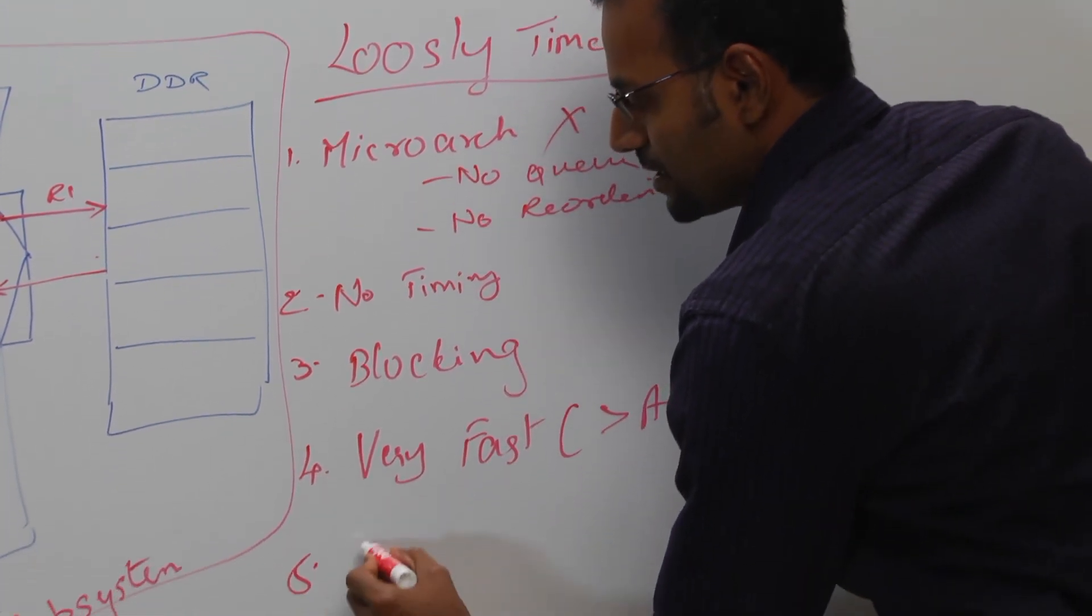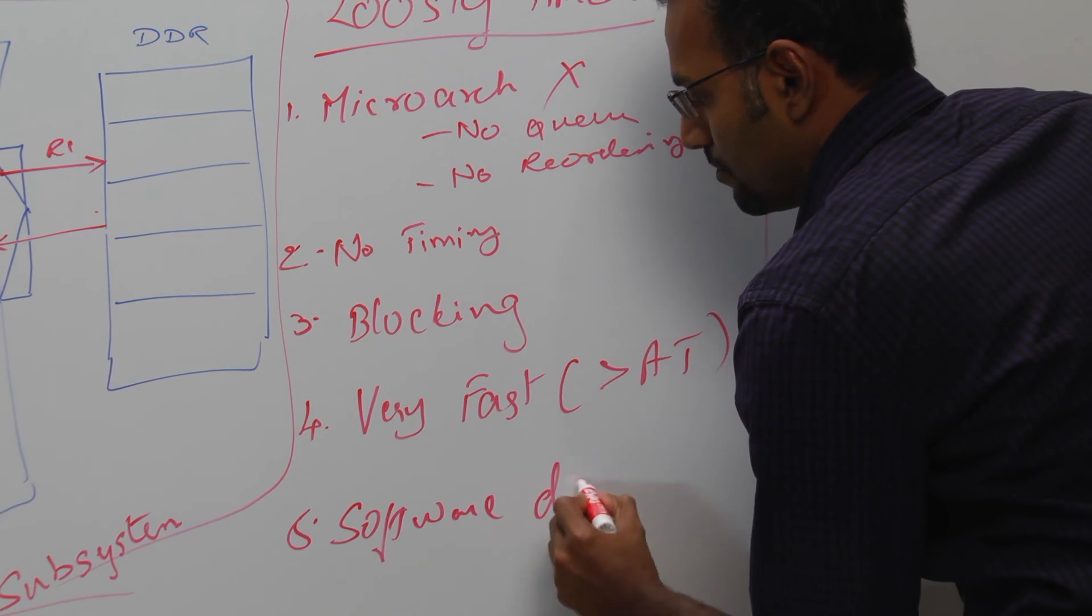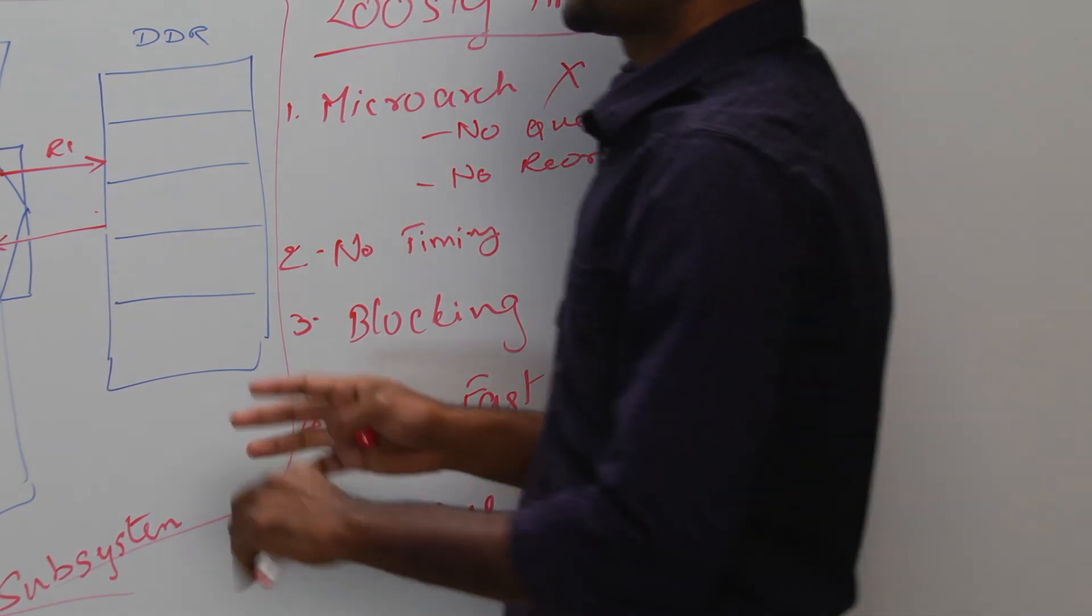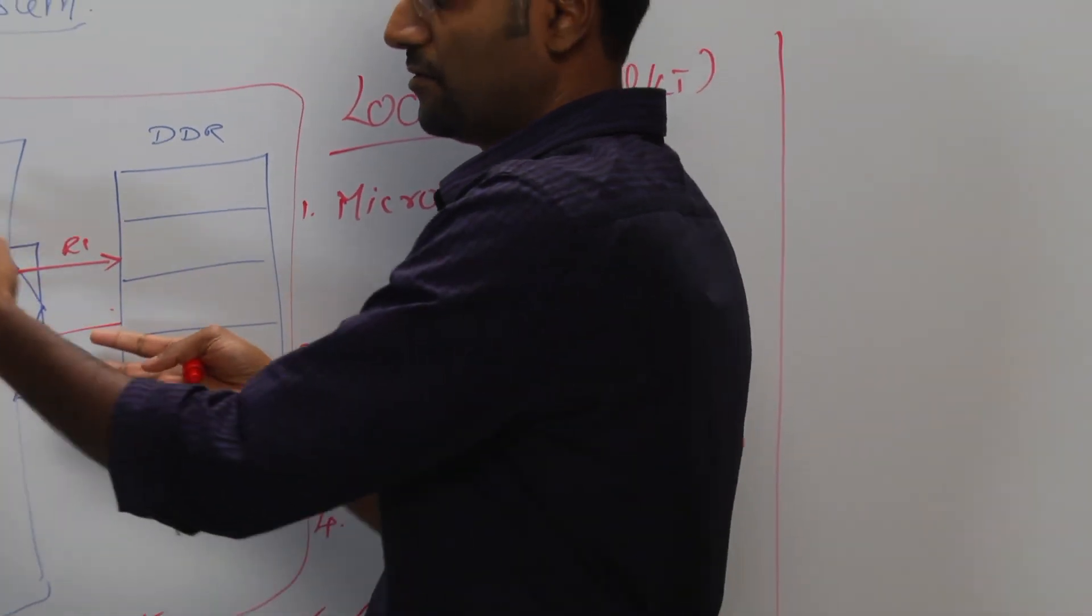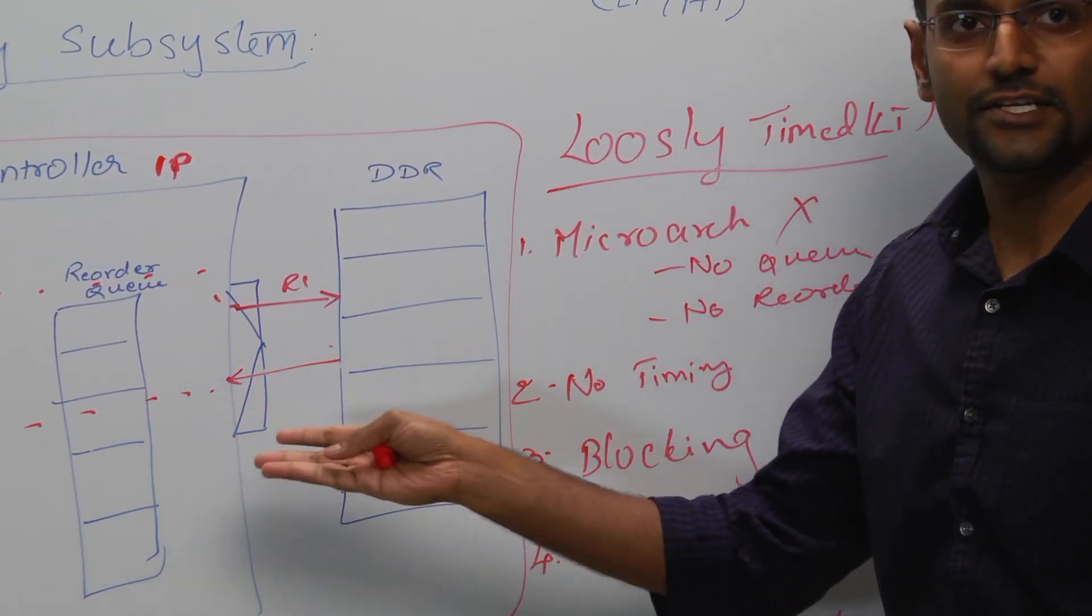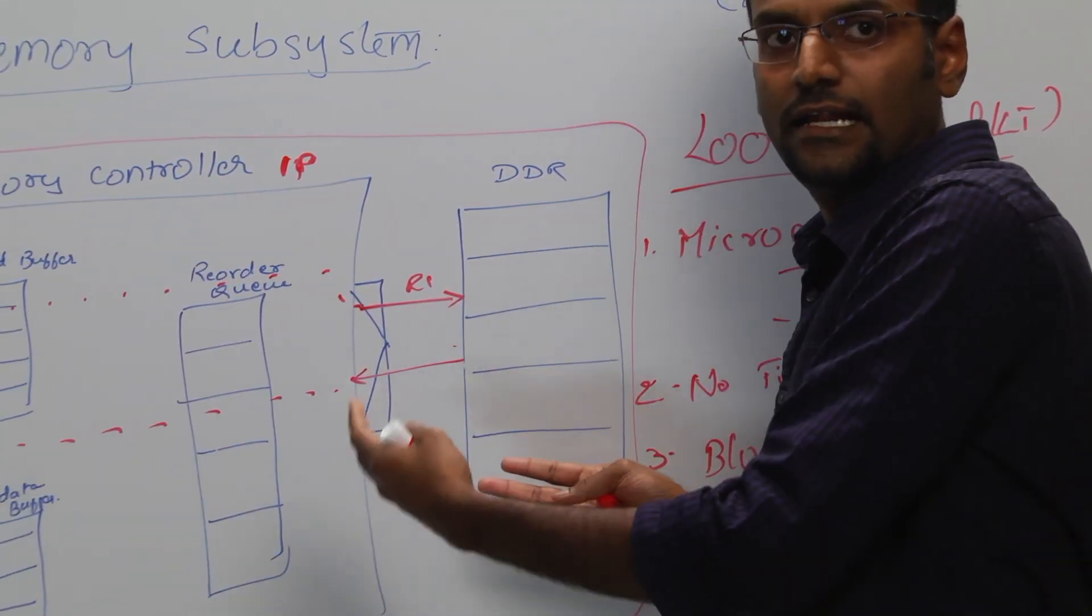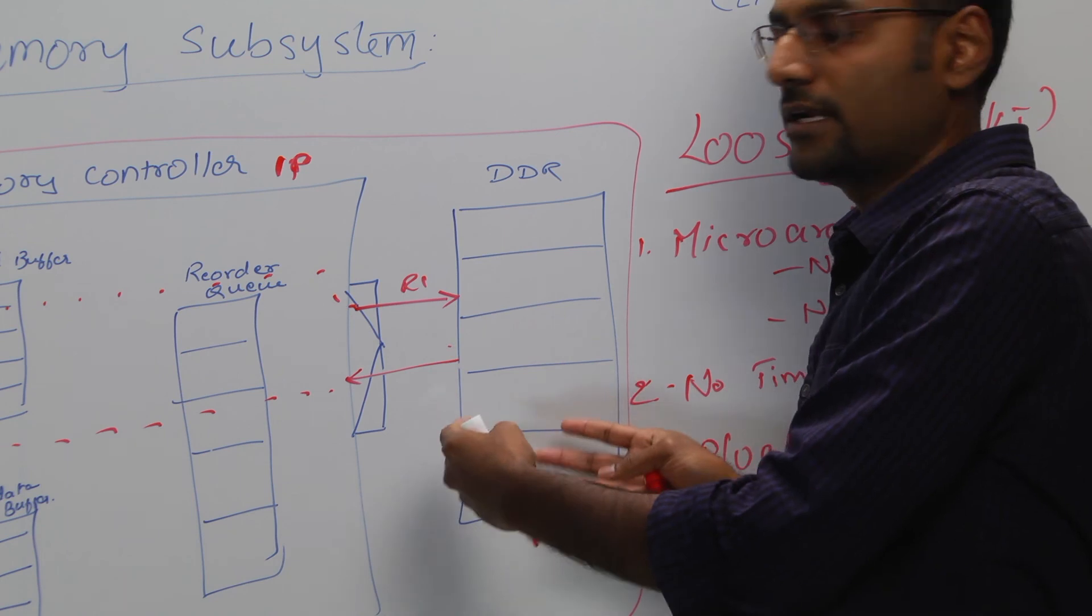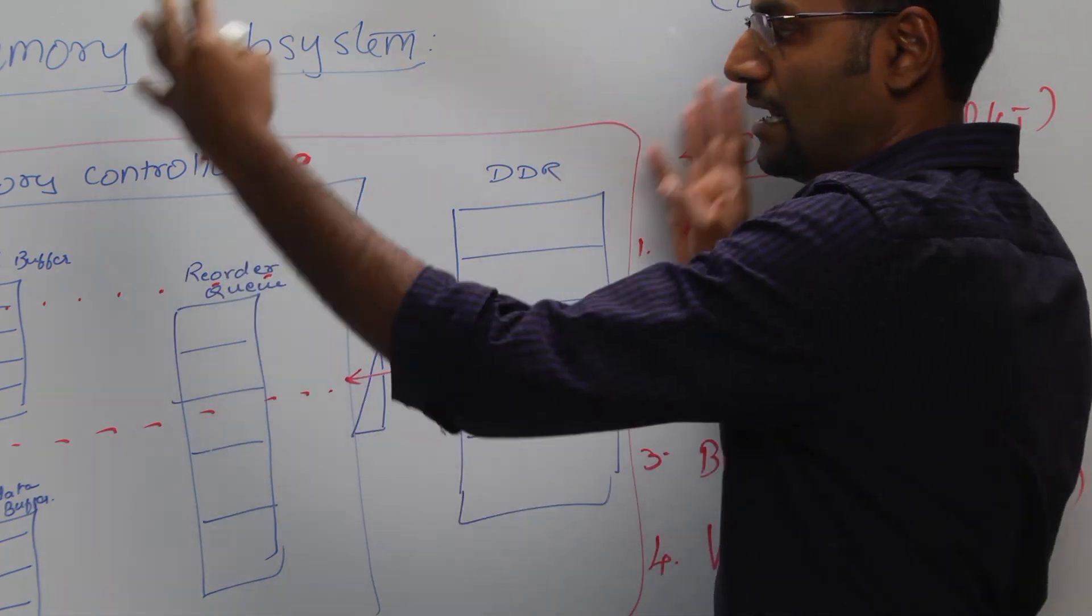Where is it being used? It's typically used for software development purposes. As you can imagine, software writers, for example driver writers, they won't need any timing or performance or delays to be modeled. All they care is the functionality. They want to read the data, write the data, store it, and they want to do it through this IP.